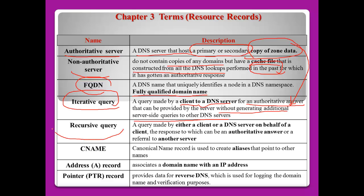A recursive query is made by either the client or DNS server on behalf of the client. The response can be an authoritative answer, or it may refer to another server if the local DNS doesn't have the exact information.